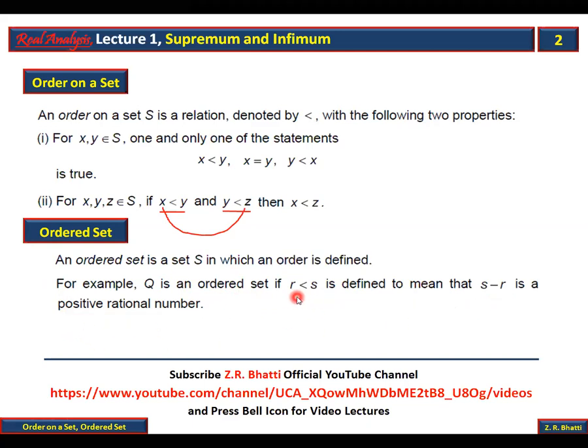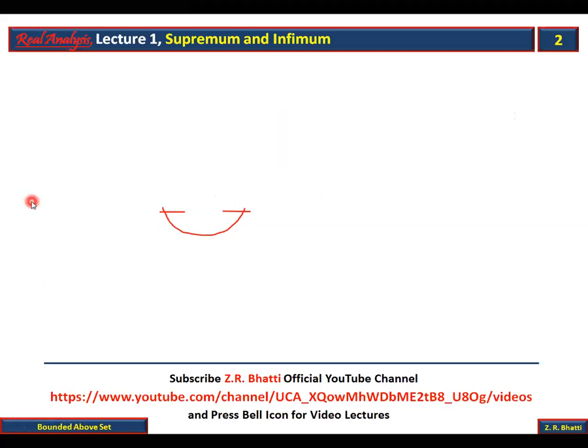Jab hum yeh kahenge ki r less than s hai kisi rational number ke liye, to us ka matlab obviously yeh nikalti hai ki s minus r is greater than zero — yani s minus r is a positive rational number. Yeh phir ek ordered set ka example hai.